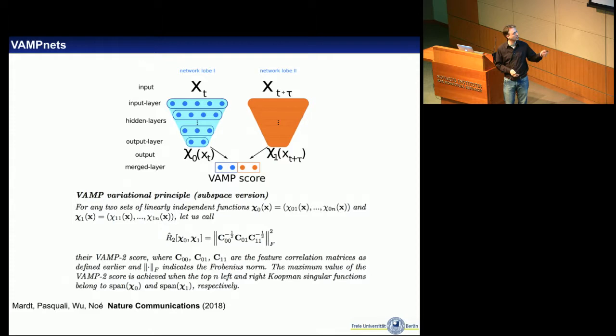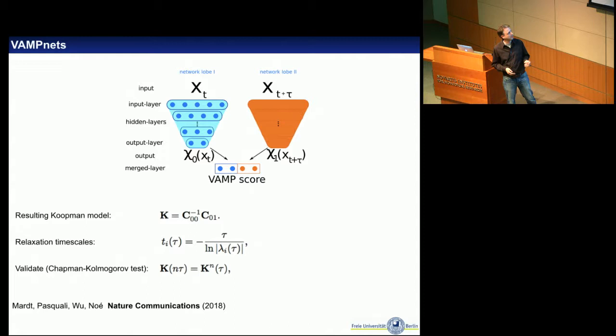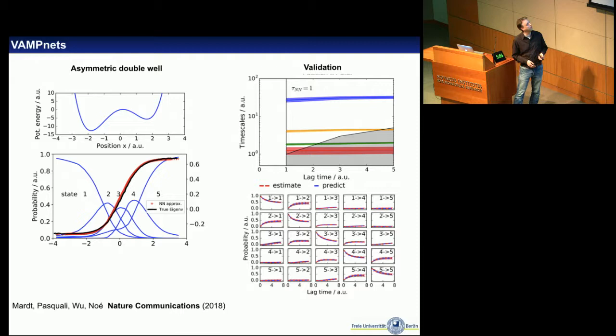We train the whole thing with a simple score involving covariance matrices computed from the data in batches, using machine learning frameworks like TensorFlow or PyTorch to maximize this. You're learning everything together — the feature transformation, the clustering, the coarse-graining — without making decisions at every step. You can do the usual things with this network: compute the transition matrix, compute timescales, test the Chapman-Kolmogorov equation, etc.